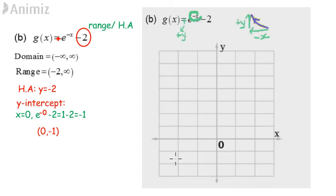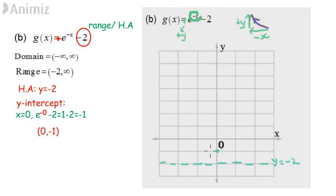The horizontal asymptote for this graph is y equals negative 2. When x is 0, y is negative 1. Draw the graph above the horizontal asymptote and label it as function g(x).